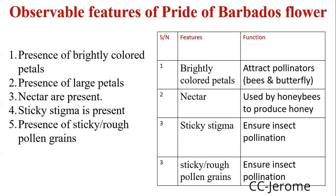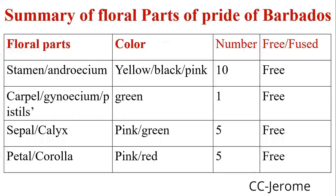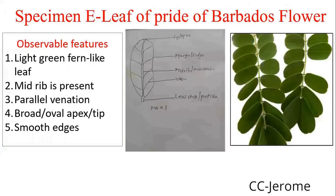You can look at the slide and identify the functions. Summary of the floral parts as you can see in this slide — the floral parts include the stamen, the carpel, the sepal, and the petal. The leaf of Pride of Barbados: observable features — light green, mid-rib is present, parallel venation throughout, apex tip, smooth edge. Pictorially this is how it looks — the tip is broad, and diagrammatically this is how it looks.